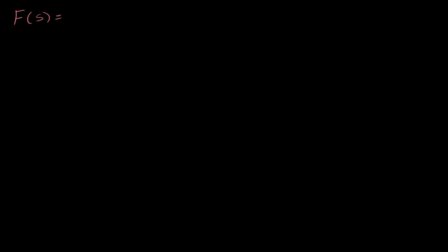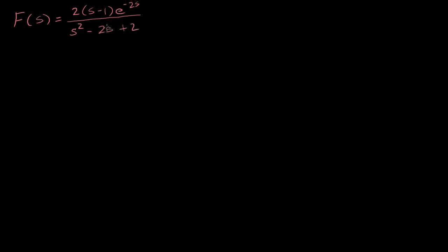Let's try a more complicated one. We're given that the Laplace transform of some function equals 2 times s minus 1 times e to the minus 2s, all over s squared minus 2s plus 2. This looks very daunting — there's an exponential, something shifted, and a polynomial in the denominator.